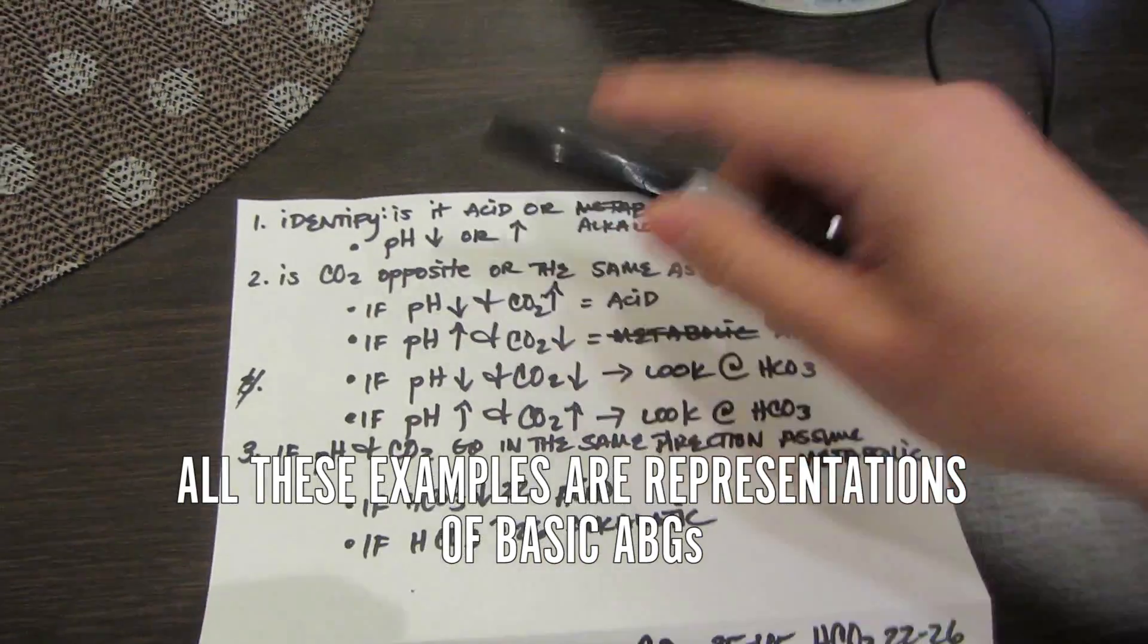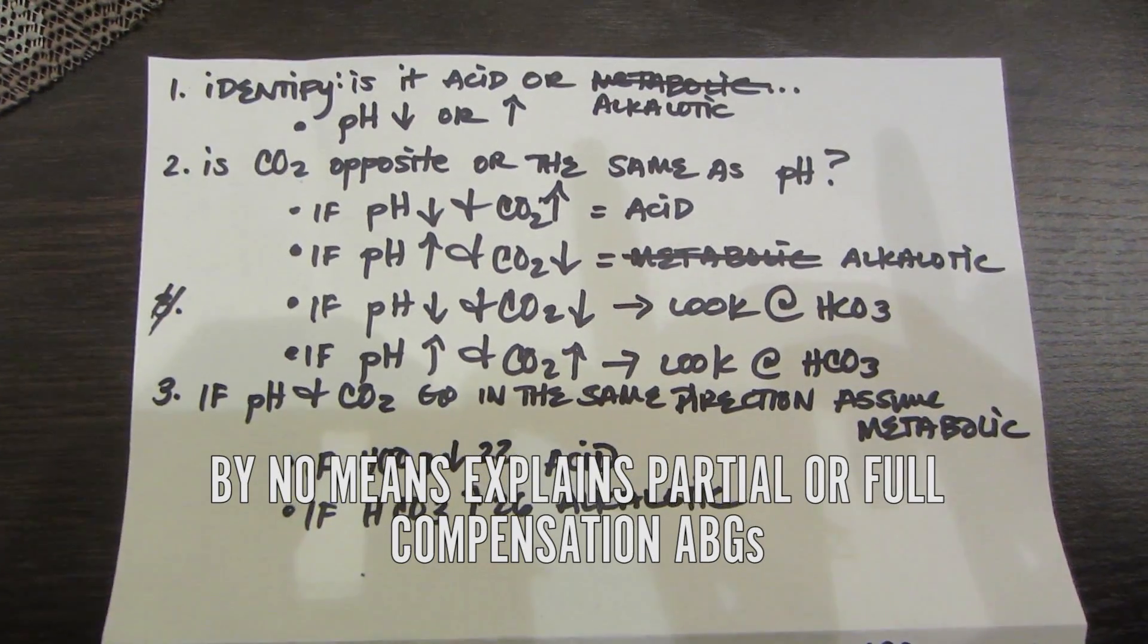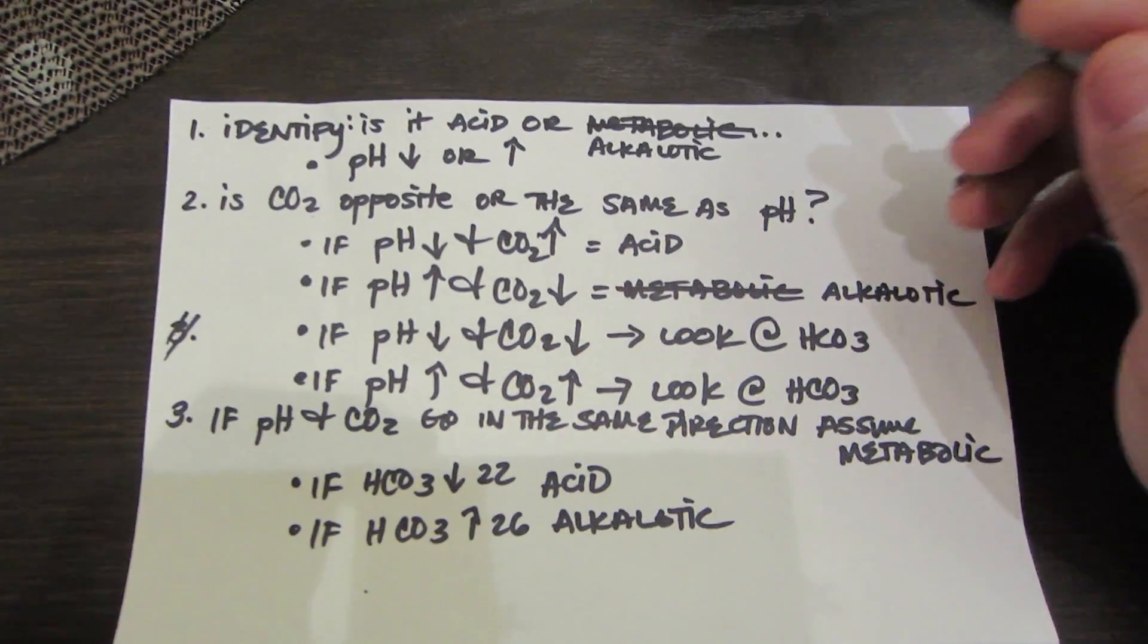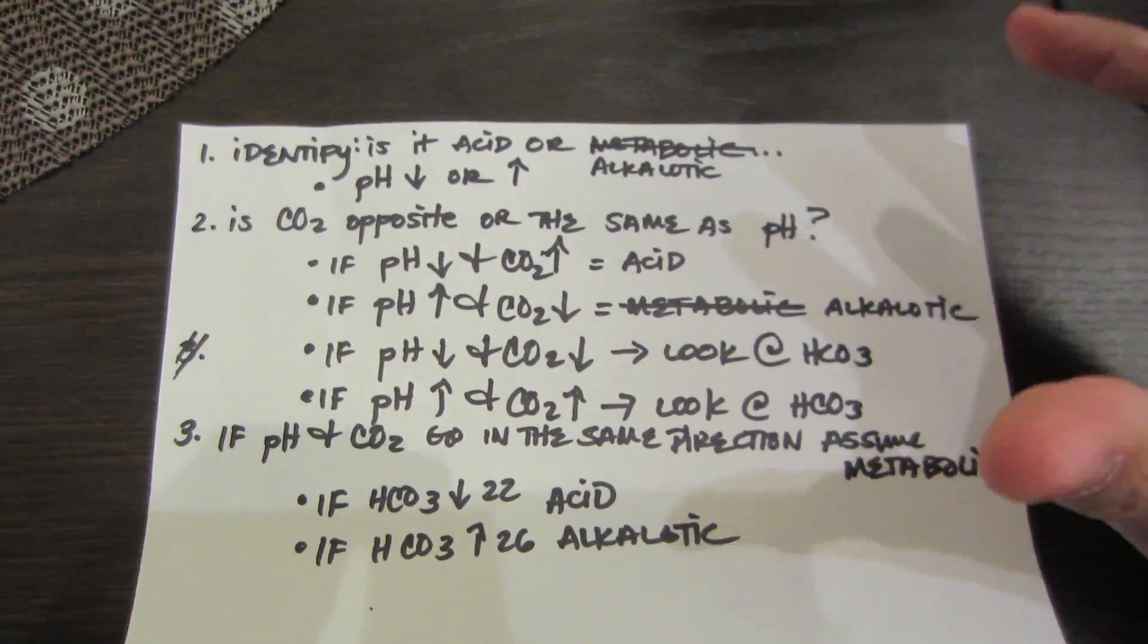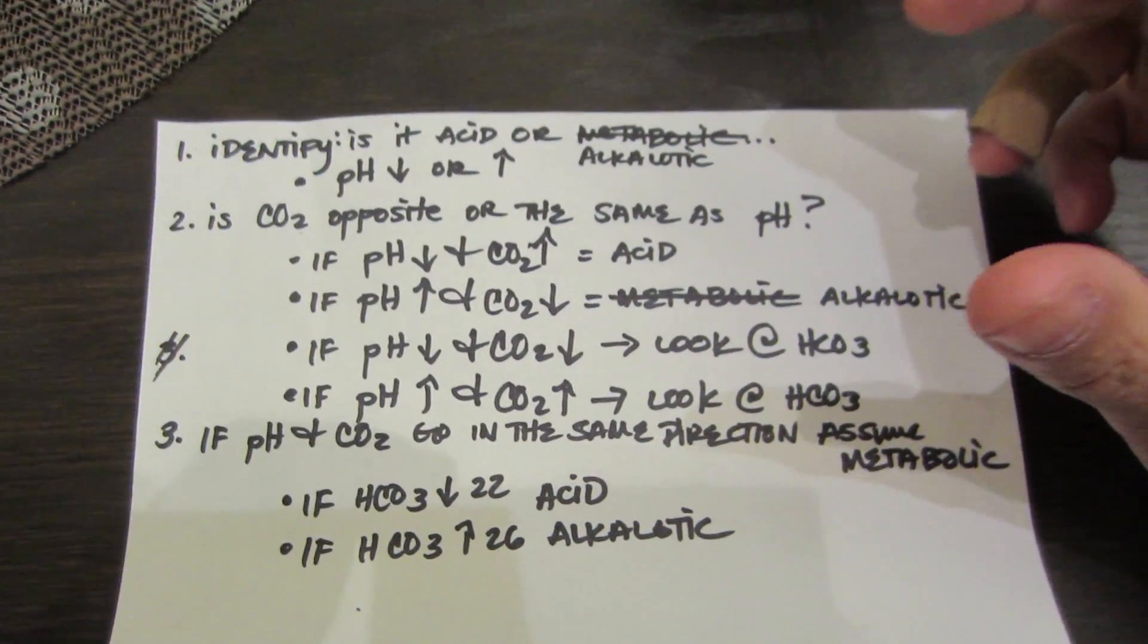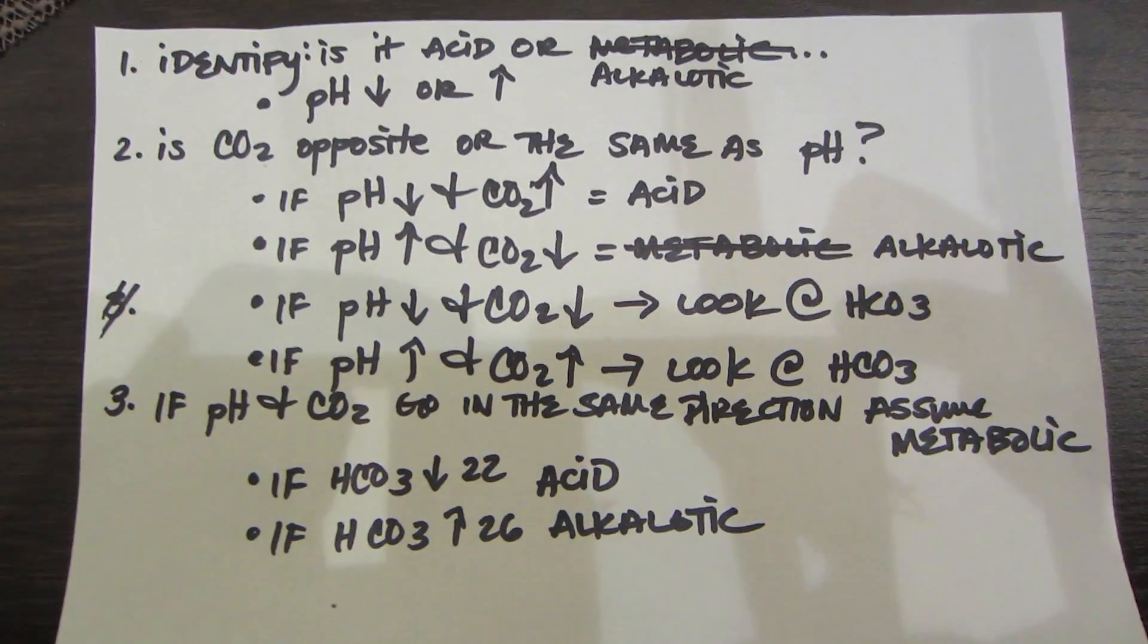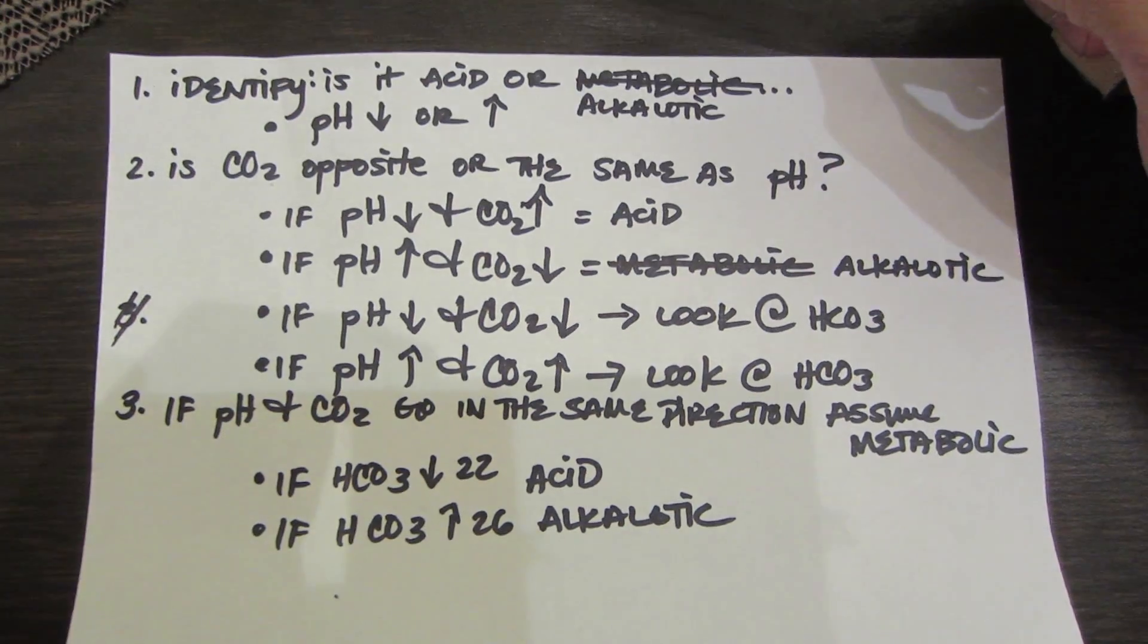All right guys, so I have a very simple method for understanding acid-base balance, or should I say arterial blood gases. Now this for some people is a very confusing concept. I'm gonna make it as simple as I can just for you to be able to understand. So go ahead, take a look at this really quick. You can even take a picture or screen capture it. These are three simple steps for you to kind of understand how to identify what the ABG is.